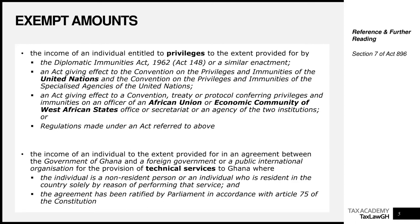The next is the income of an individual to the extent provided for in an agreement between the Government of Ghana and a foreign government or public international organization for the provision of technical services to Ghana, where that individual is a non-resident person or is resident in Ghana only because of performing the service, and that agreement has been ratified — meaning approved — by Parliament of Ghana in accordance with the Constitution. For example, Ghana wants to do an impact assessment of a certain policy and engages someone from the German government or the World Bank to perform that service.